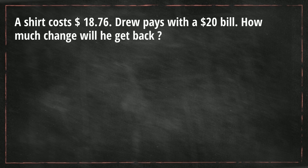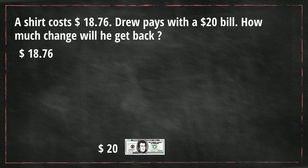So instead of having to subtract, we're going to count up, and here's how it's going to work. We know that the cost is $18.76. We're going to count up to $20 because that's how much Drew paid with. So we're going to start with $0.04 because that makes $18.76 go to $18.80.